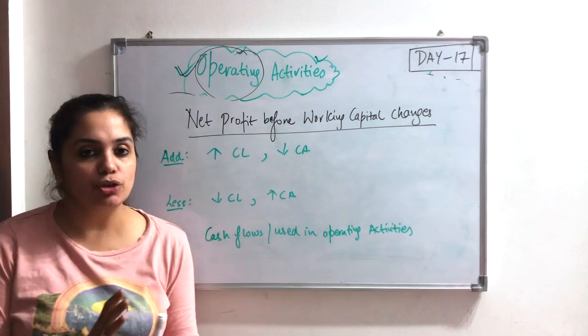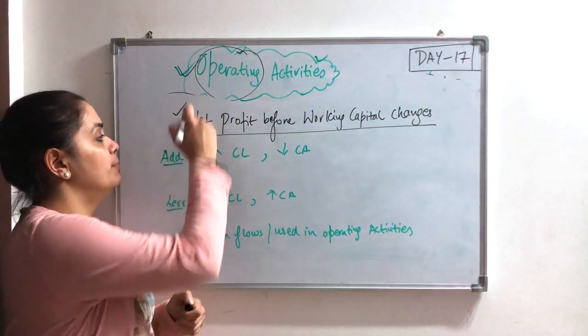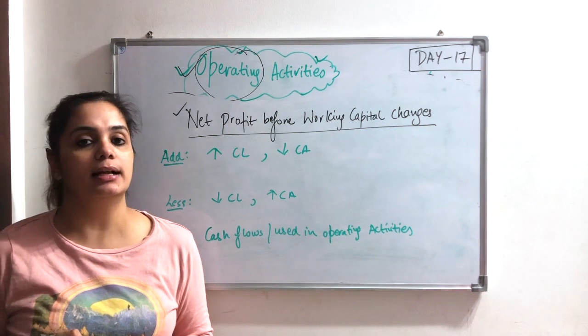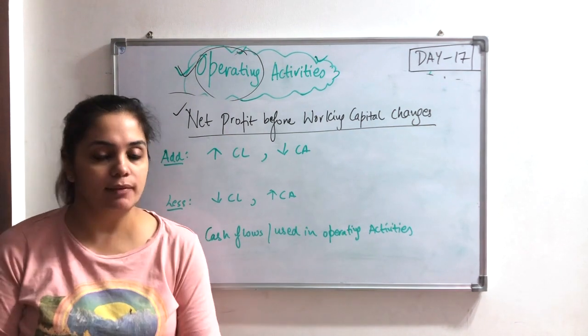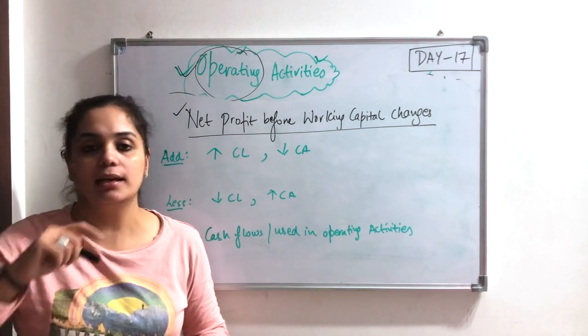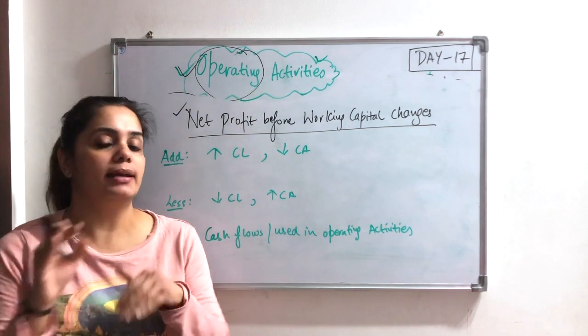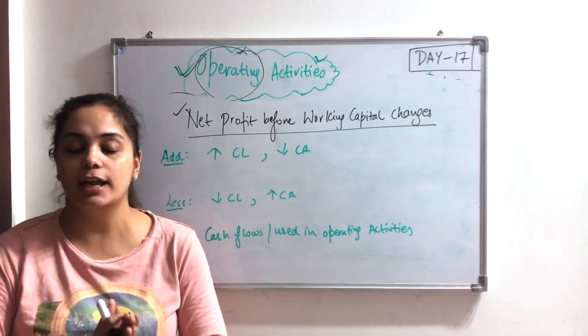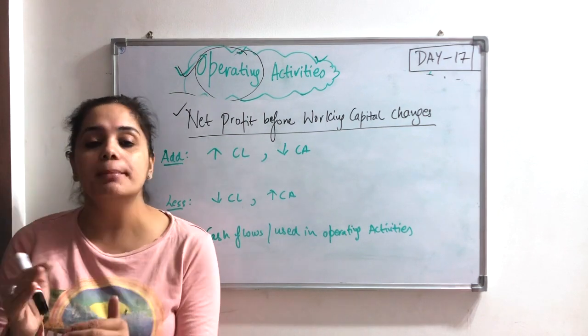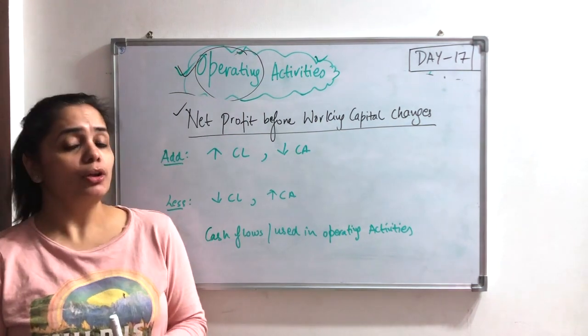I have told you in my last video in which way we will remove net profit before working capital changes. I will revise again. First of all, we have removed net profit and added and minus all appropriations. After that, what did I do?